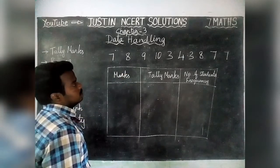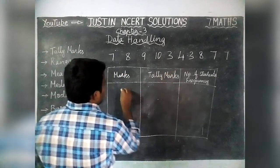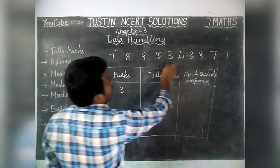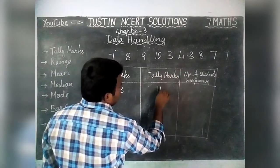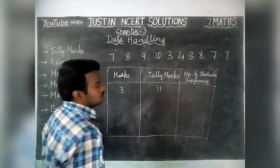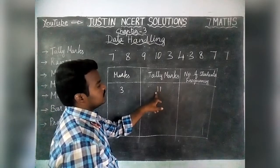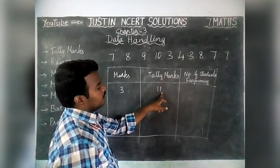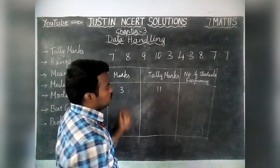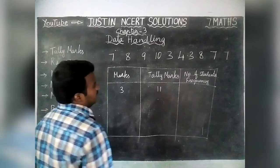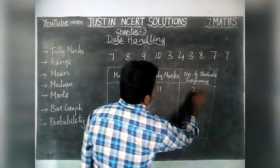We will start from the smallest mark. The lowest mark is 3. Totally 2 students got that mark, so we write 2 tally marks. Two bars written means 2 lines, that is equal to 2. Count is 2.